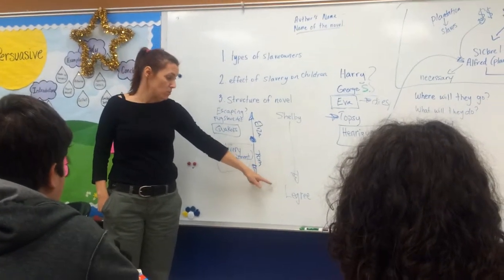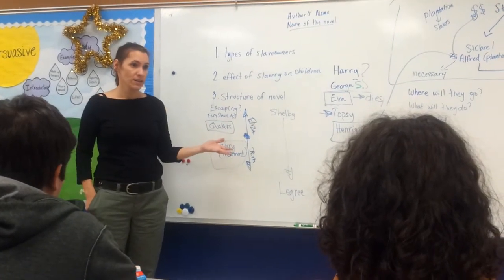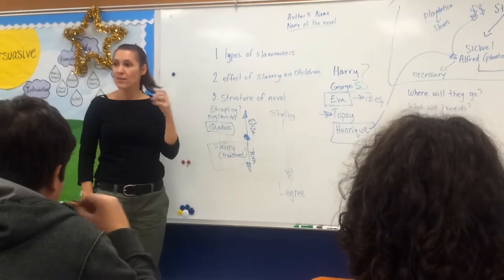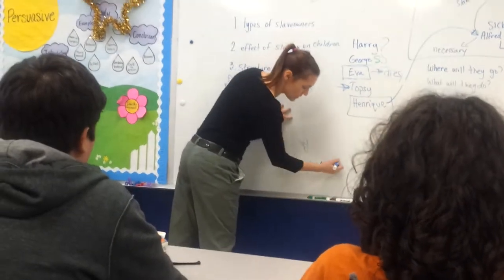Right? It becomes very clear. Because what does LeGree have a major problem with? And in chapter 32, you already know this. With his religion. And he cannot stand the faith that Tom has.